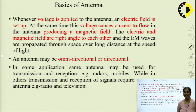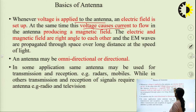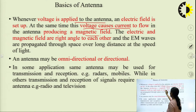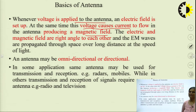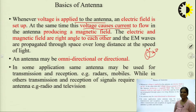Whenever voltage is applied to the antenna, an electric field is set up, and at the same time the voltage causes current to flow through the antenna, producing a magnetic field. The electric and magnetic fields are at right angles to each other — these two fields are perpendicular to each other.